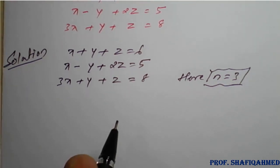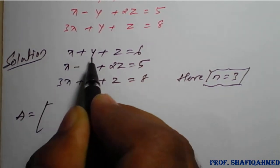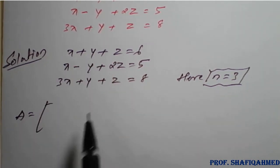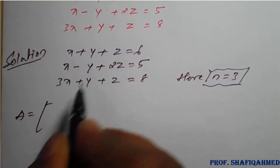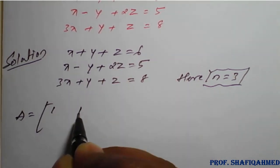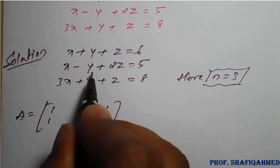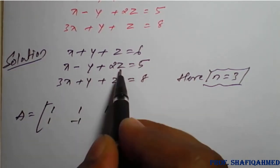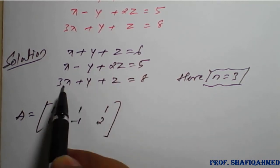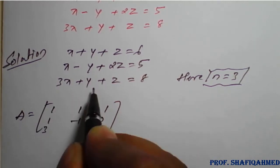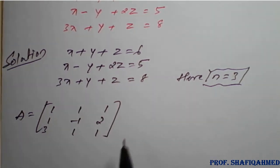Once we have the system, we need to form it in matrix form. Matrix A contains the coefficients of x, y, z from all equations. First row: 1, 1, 1. Second row: 1, minus 1, 2. Third row: 3, 1, 1. This is matrix A.